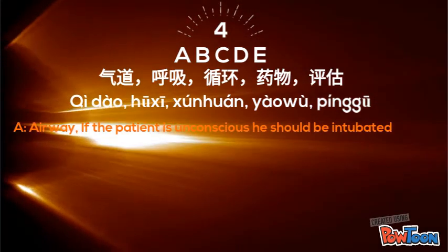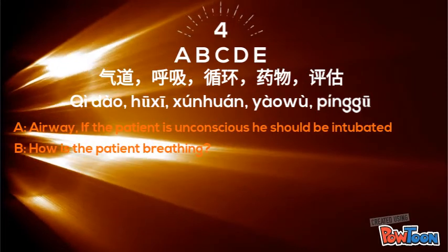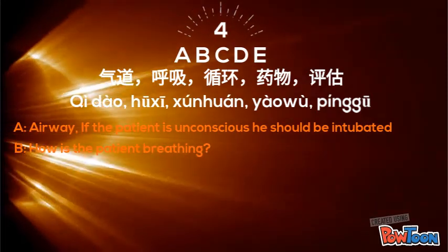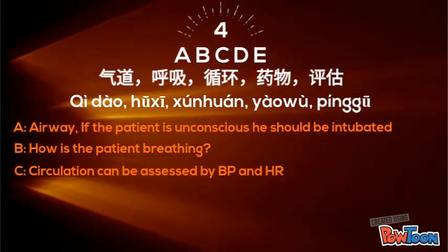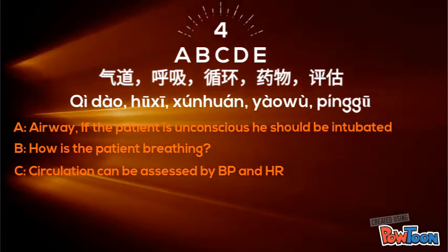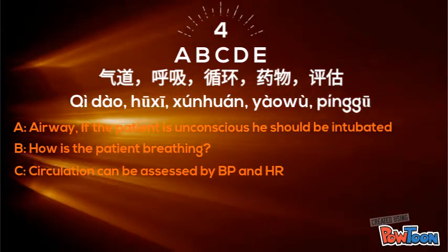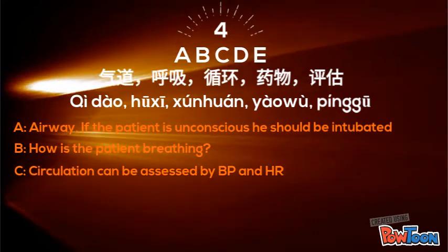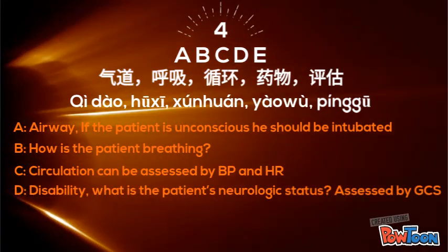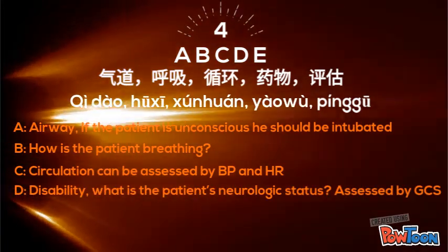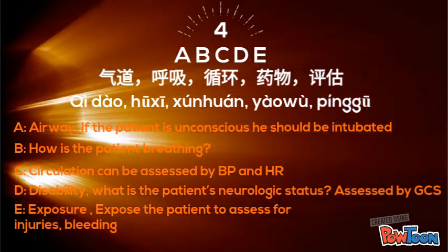A is for airway — qi dao. B is for breathing — hu xi. C is for circulation — xun huan. D and E vary across centers and across countries, and according to patient needs. D can stand for disability and E for drugs, and E for examine or expose, and so on.